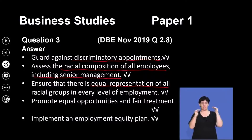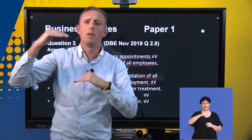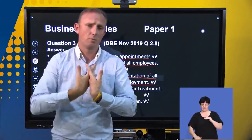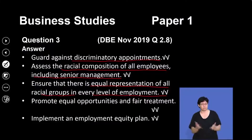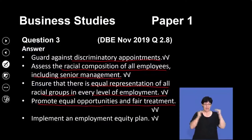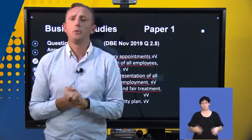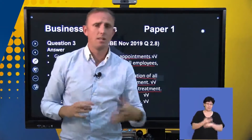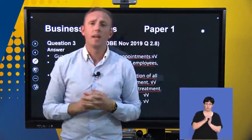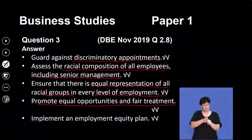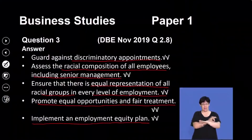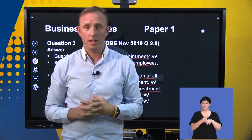We have to ensure equal representation of all racial groups at every level of employment — top, middle and lower level management as well as actual employees — representative of the demographics of the country. It has to promote equal opportunities and fair treatment for everyone, regardless of racial group, marital status, disabilities, or religion. Everyone has a fair and equal opportunity in the workplace under this act. We must implement an Employment Equity Plan detailing how the business is going to be representative of the demographics of the country.